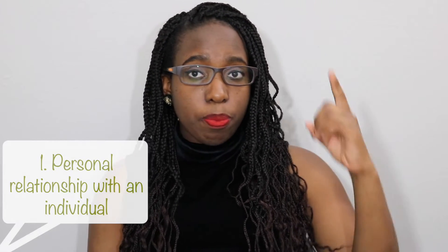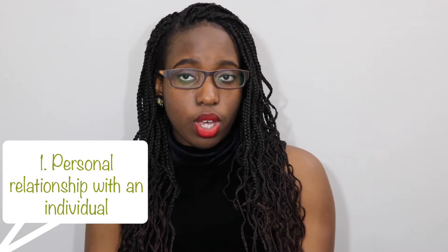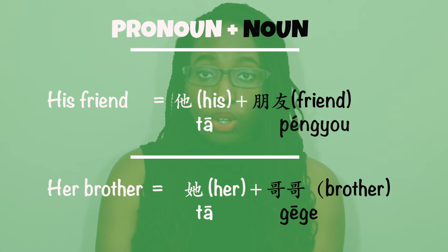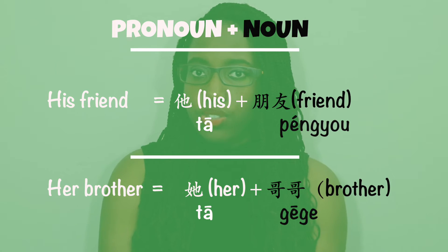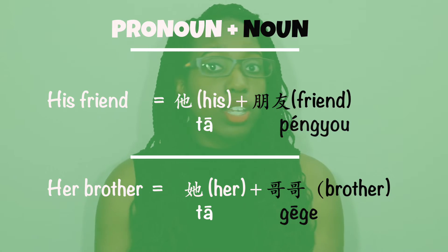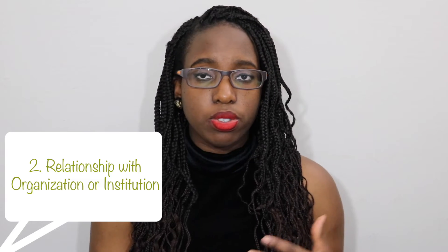You can omit the 的 in two cases. One: where you have a personal relationship with someone — like a family member, a friend, your girlfriend, your boyfriend, your wife, your husband. For example: 他朋友 — 'his friends'. 'Her brother' — 他哥哥.